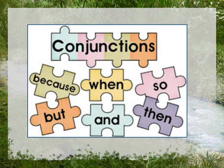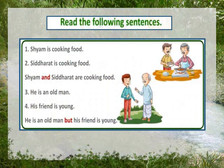Good morning students. Let's understand conjunctions. Read the following sentences: Shyam is cooking food. Siddharth is cooking food. Shyam and Siddharth are cooking food.